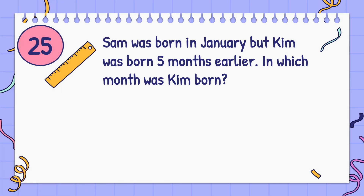A child was born in January, but Kim was born five months earlier. In which month was Kim born? Answer: August.